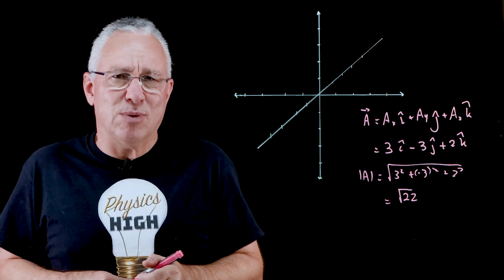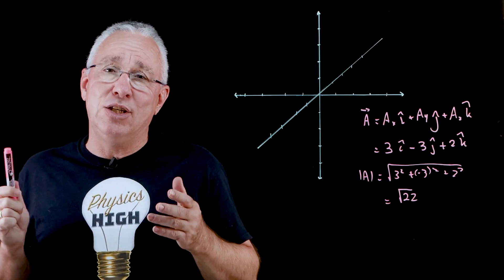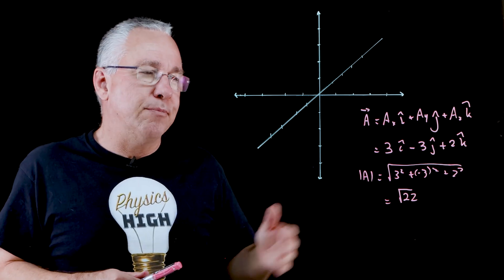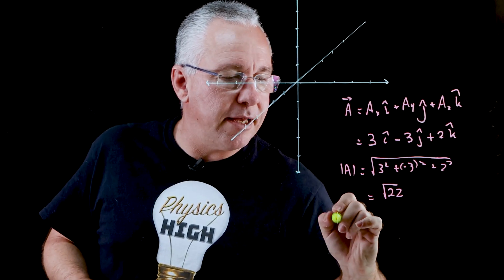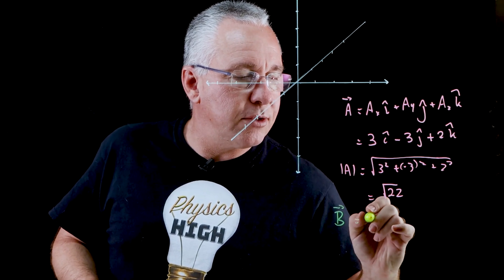Finally, how do we then add vectors? Well that's very simple, you just add the unit vectors for each of the components, in other words the i hat, j hat, and k hat.